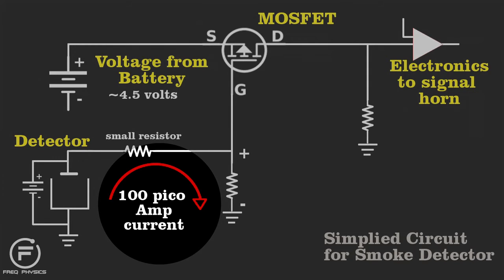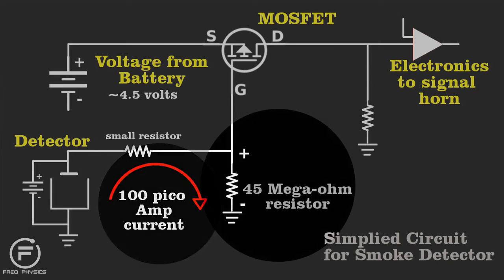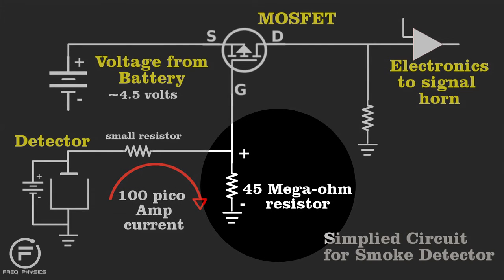Here is where the ionized gas creates the tiny current between the two electrodes I showed you earlier. That current passes through a large resistor and creates a voltage that opposes the battery, and it shuts down current flow through the MOSFET.